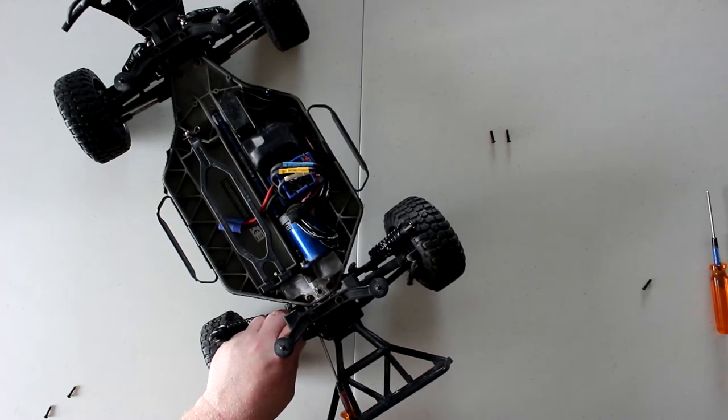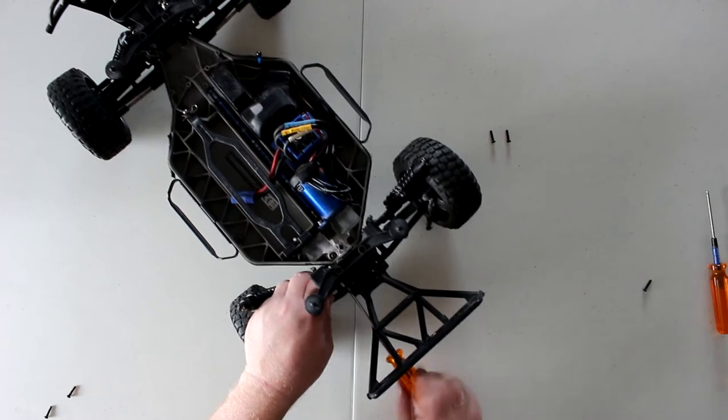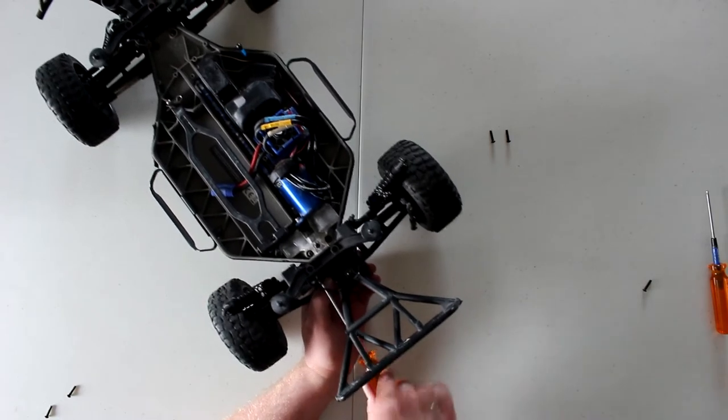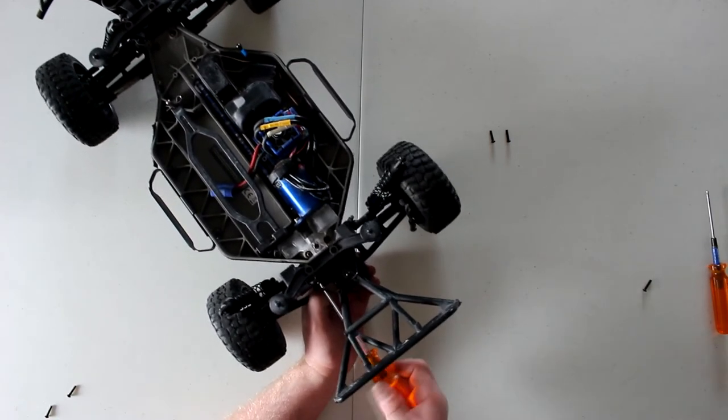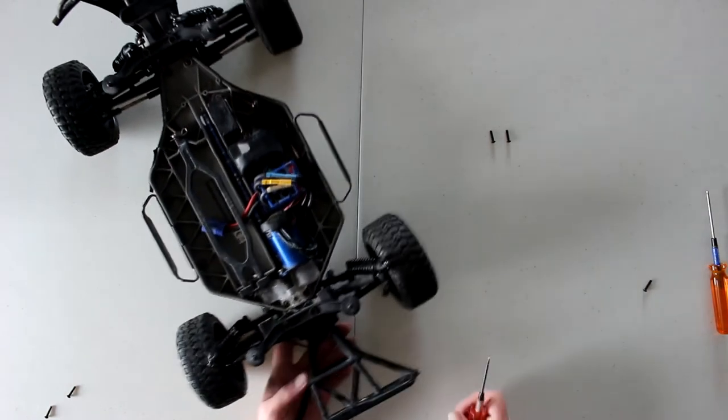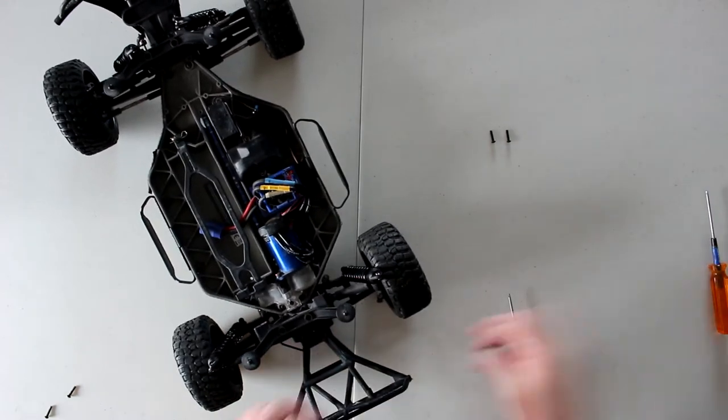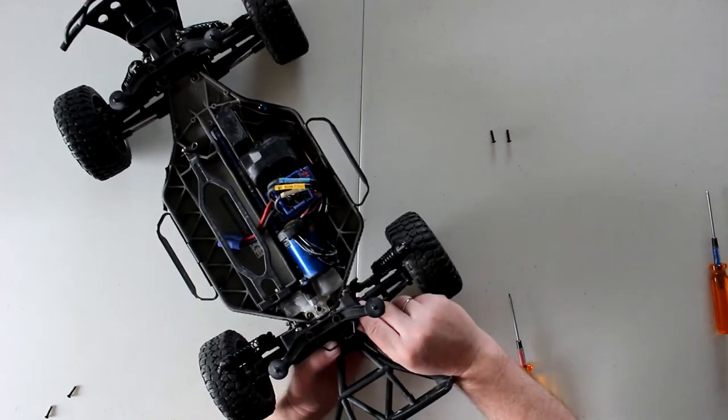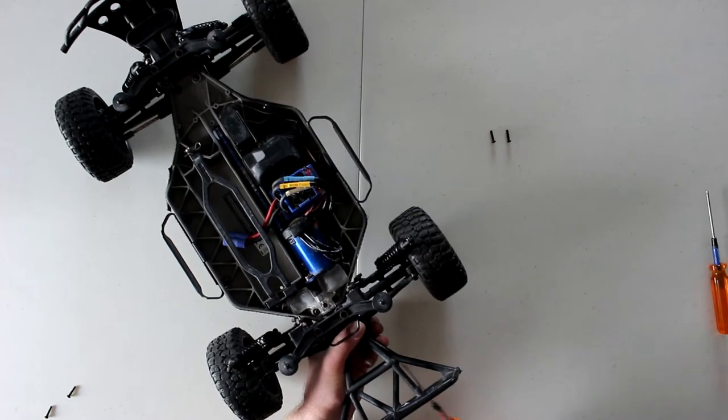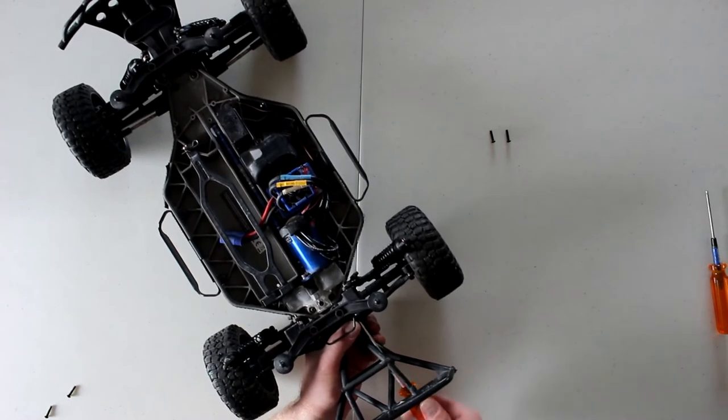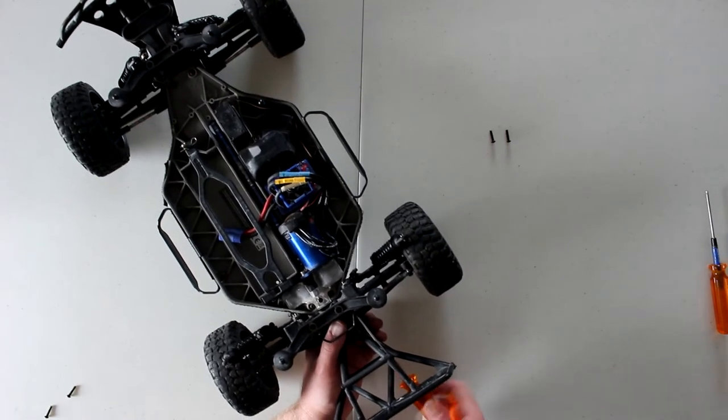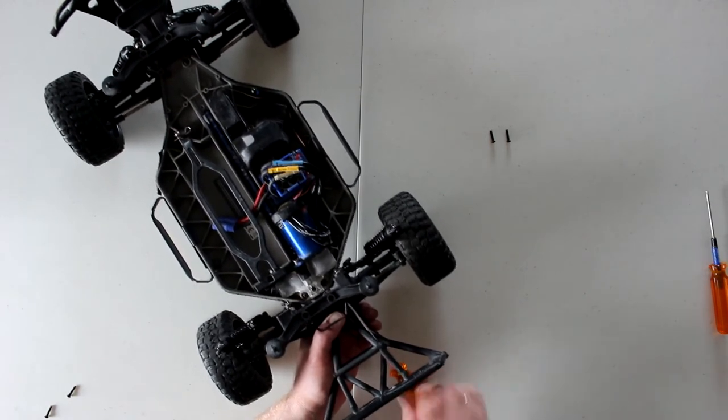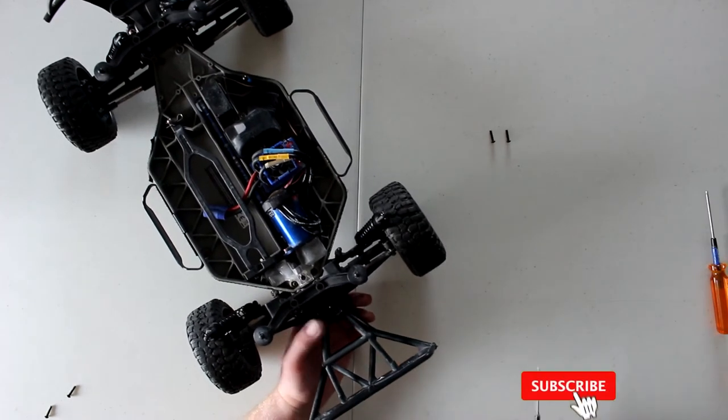Now you'll notice too, when putting the rear links, there's multiple holes on the back. That's to give you different camber. Just try to remember where it was—there's three holes on top, two holes on the bottom. The best piece of advice I can give you is take pictures before you dismantle it, or even better, look at your manual. Your manual will tell you exactly where it goes. The links are back.